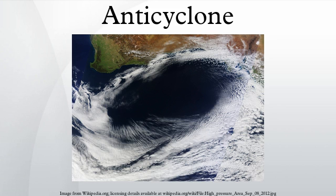High-pressure systems are alternatively referred to as anticyclones. The subtropical ridge forms due to the Hadley cell circulation between the equator and the subtropics of the Northern Hemisphere and Southern Hemisphere. Upper-level high-pressure areas lie over tropical cyclones due to their warm core nature. Surface anticyclones form due to downward motion through the troposphere, the atmospheric layer where weather occurs.